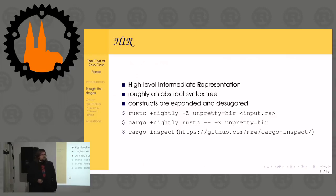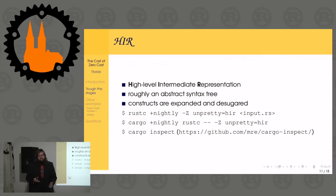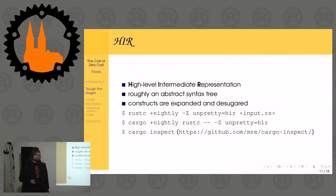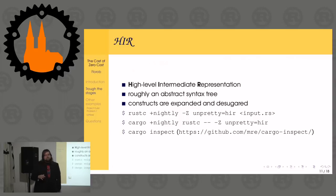Next step: high-level intermediate representation. It's roughly an abstract syntax tree - it describes operations and their arguments in tree form. In HIR, pretty much all constructs in the surface language are expanded. In particular, for loops are actually expanded to a lower level form, but otherwise it still looks a lot like the surface language.